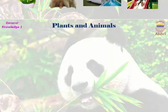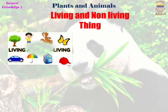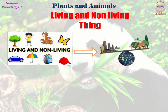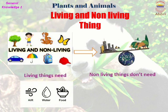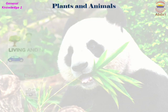Living and non-living things together make up the world. Plants, animals, and humans are all living things, and they need food, water, and air. Non-living things do not need food, water, and air.